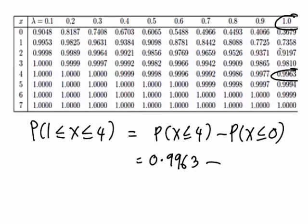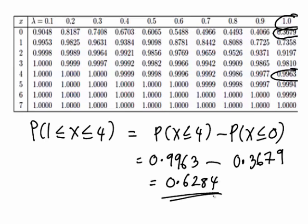We're subtracting off the probability of X less than or equal to zero, which is just the probability of X equals zero since this can't take negative values. So subtracting 0.3679 gives us a probability of 0.6284 of having between one and four flaws inclusive in a roll.